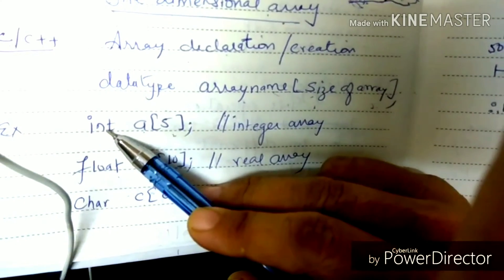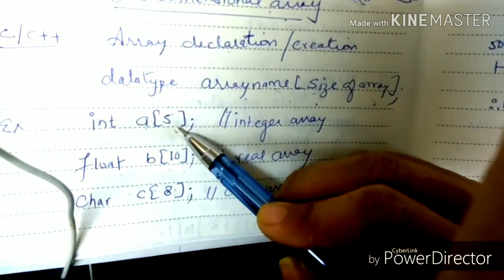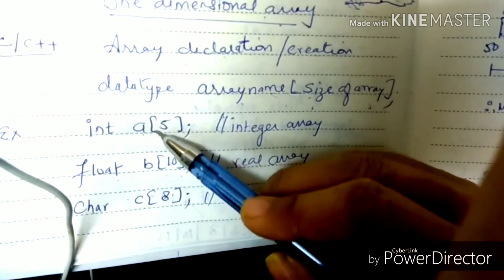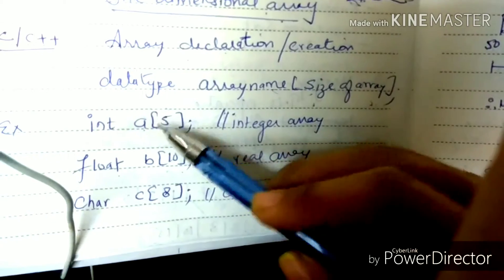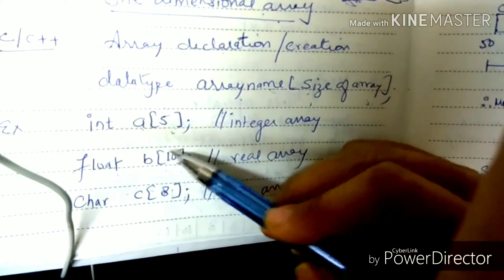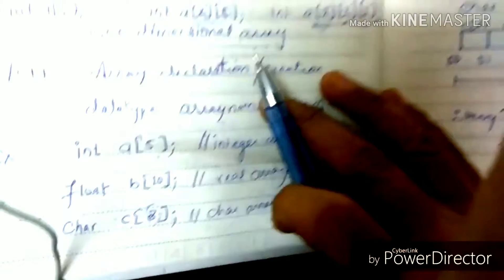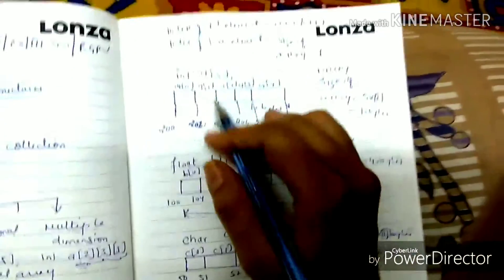So with this type, we create a C++ array. We write the data type, then the name of the array, then the size. I want to create 5 integers, 10 float values, and 8 characters.